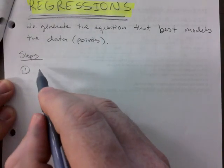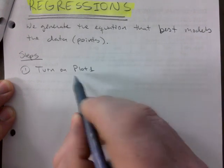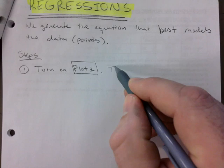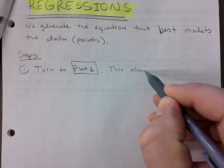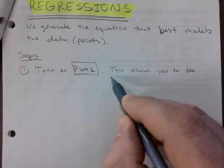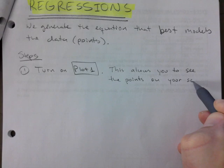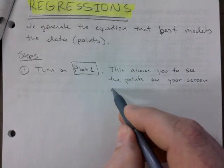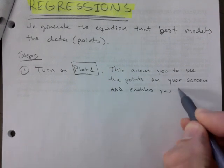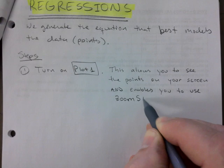First step: turn on Plot 1. This allows you to see the points on your screen and enables you to use what I will refer to as Zoom Stat.